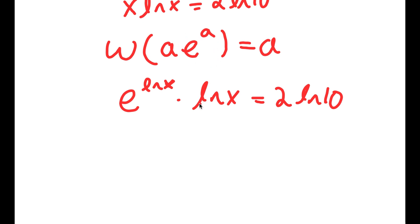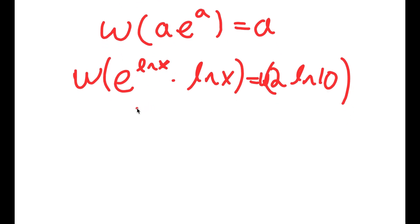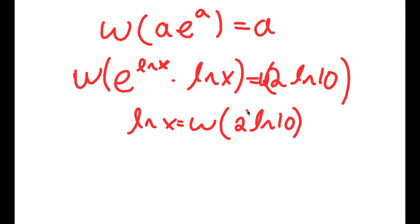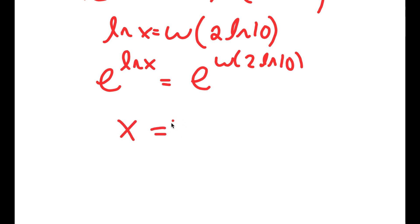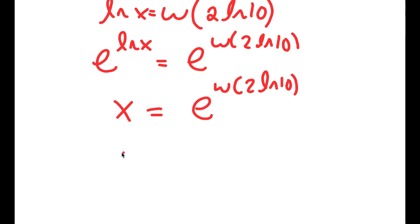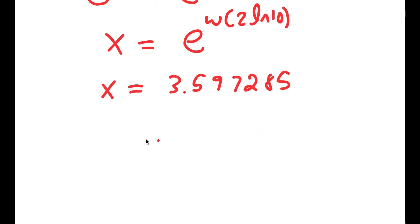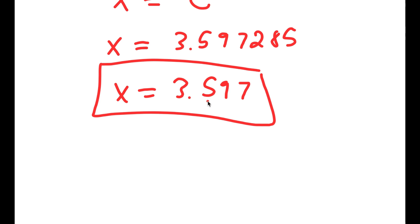Taking the W Lambert function on both sides, this results in ln x equaling W of 2 times ln 10. Taking e to the power of both sides, e to the power of ln x equals x, so I get x is equal to e to the power of W of 2 times ln 10. This is equal to 3.597285, which rounds to 3.597, and that is my answer.